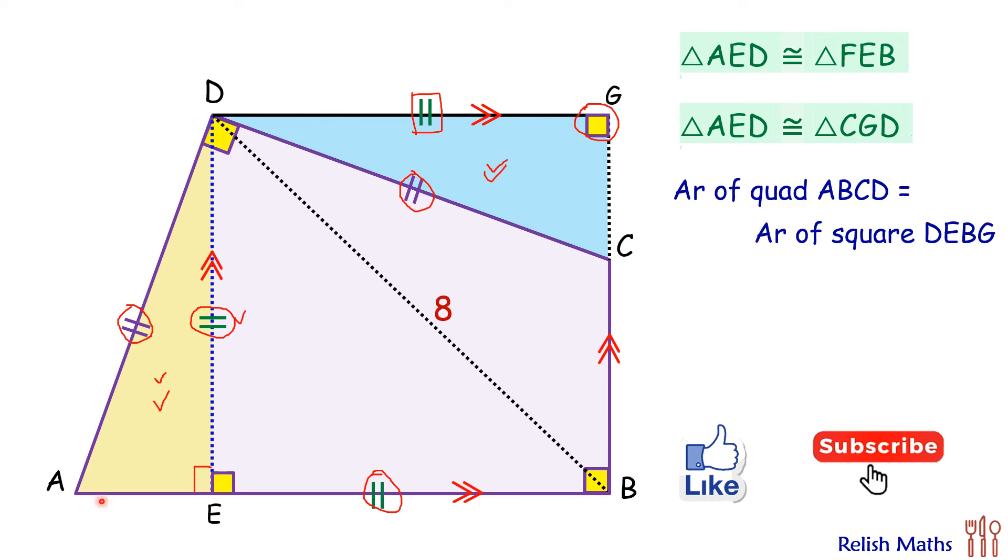Area of quadrilateral ABCD is same as area of square DEBG. And area of square DEBG, here BD is nothing but the diagonal. So area of quadrilateral ABCD is half of diagonal squared. Putting the value of D as 8, we'll get area of quadrilateral ABCD is 32 cm squared.